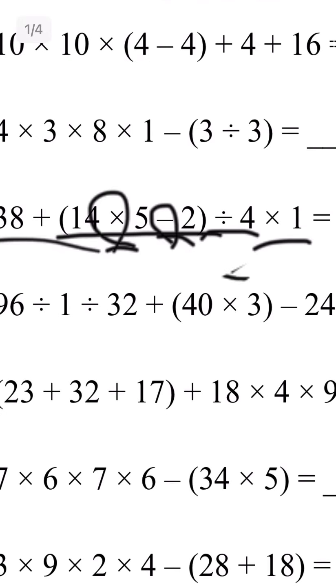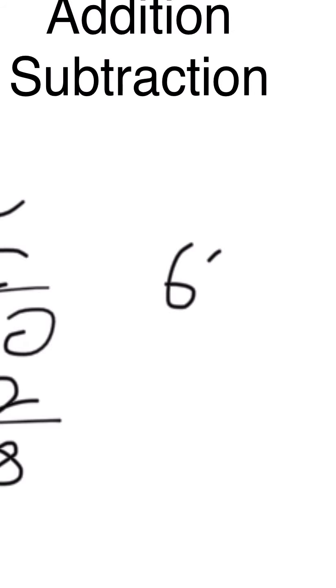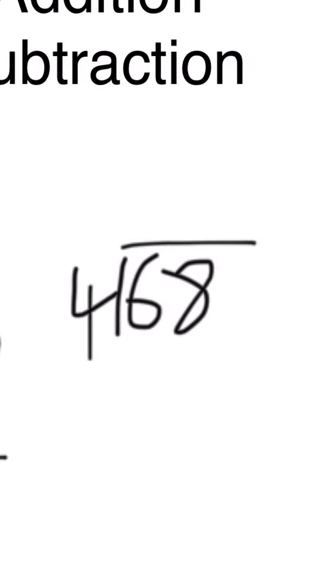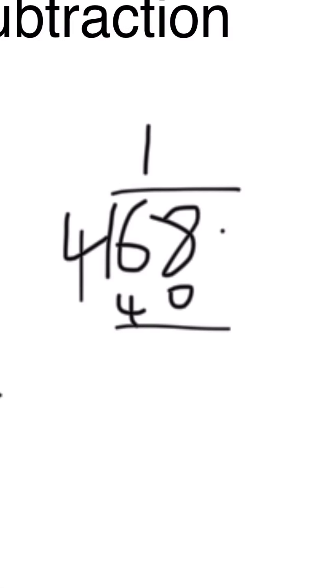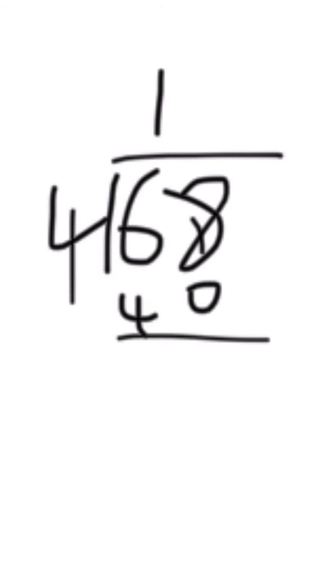Next we need to do division. 68 divided by 4. We need to write 1 here. 4 times 10 is 40, subtract 40 from this number. We got 28, and 7 times 4 is 28.